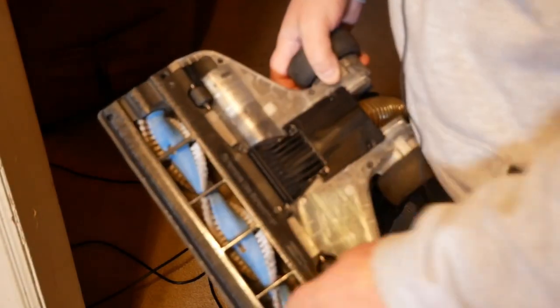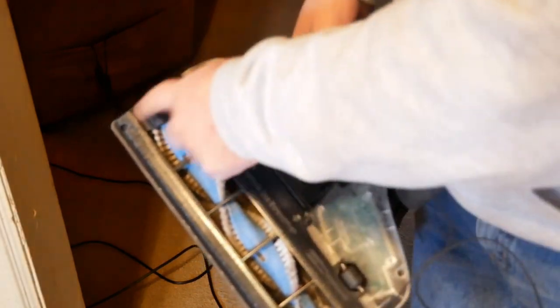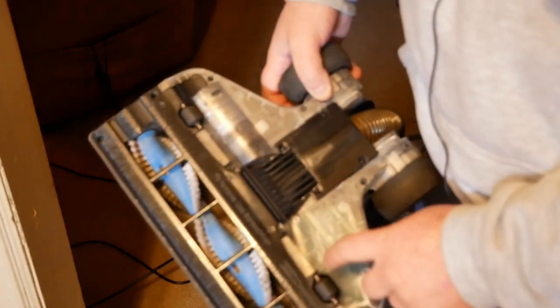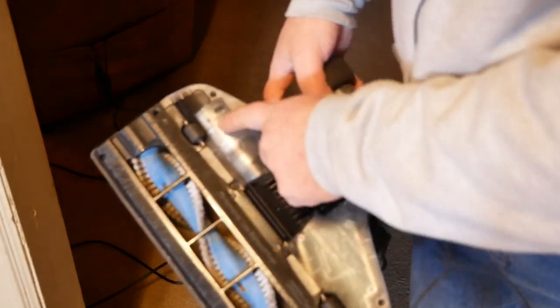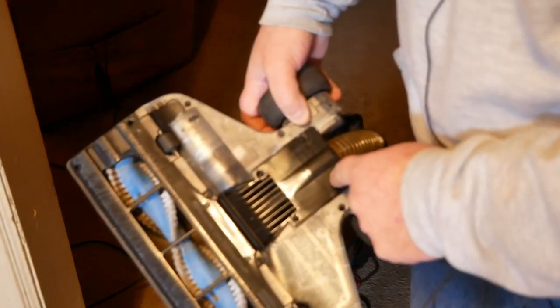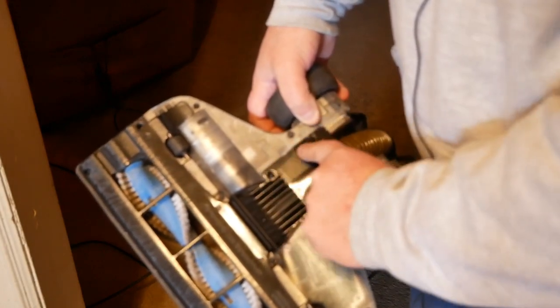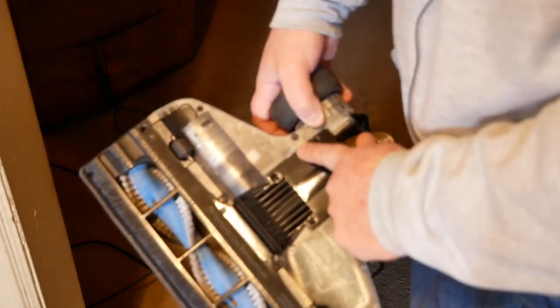So, I'm going to take this off, which they have the screws numbered, one through six, and that just pulls off. Then, I'm going to take the clear plastic plates off. There's a circuit board here, motors here, the switch is somewhere up in here, I'm assuming.